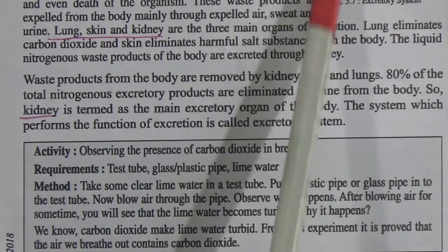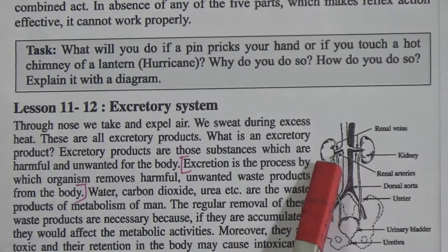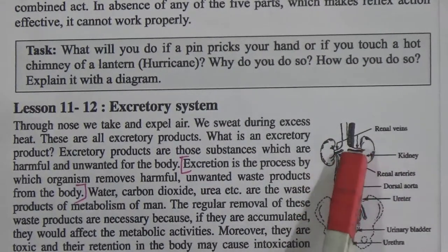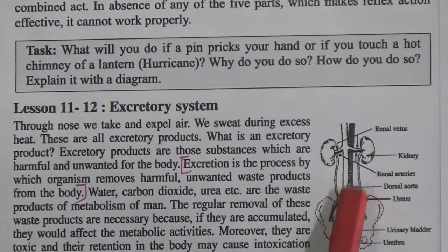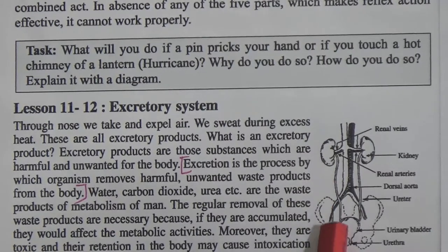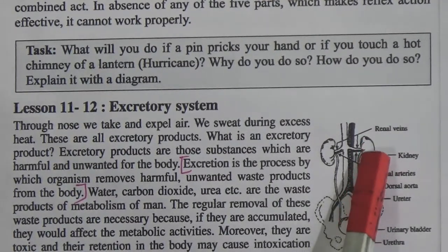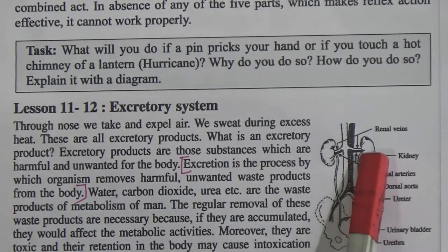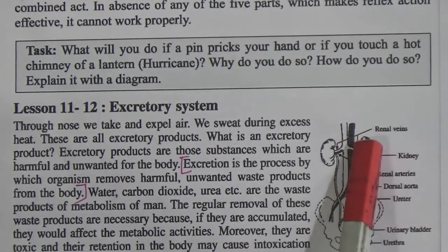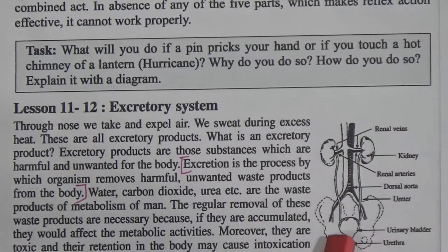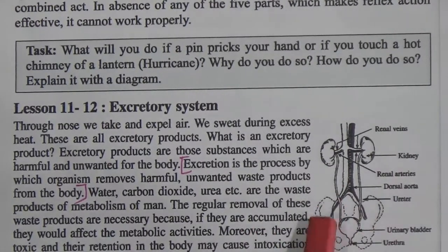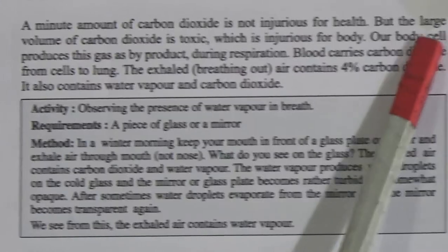The system that performs the function of excretion is called the excretory system. The main excretory organ is the kidney. There are two kidneys situated along the vertebral column on the back side of the cavity. The dorsal aorta supplies blood to the kidney. The kidney works like a filter, producing urine while purified blood is sent back to the body. Urine passes through the ureter to the urinary bladder and exits through the urethra.